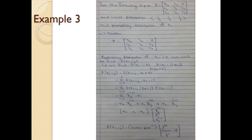We write P(X2=j) = alpha_0 · P0j² + alpha_1 · P1j² + alpha_2 · P2j². This can be expressed as the initial distribution vector (row-wise) multiplied by the j-th column of P². So in general, P(X2=j) equals the initial distribution times the j-th column of P².